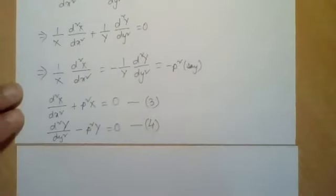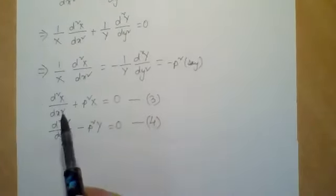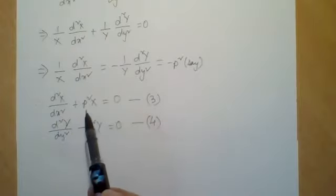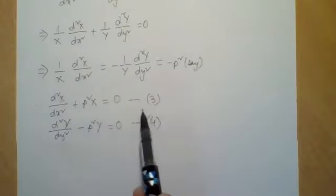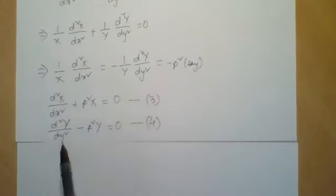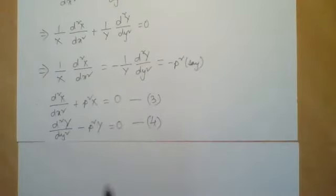We have obtained two ordinary differential equations: d²x/dx² + p²x = 0, and d²y/dy² - p²y = 0, which are equations 3 and 4.